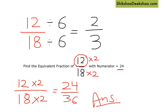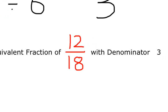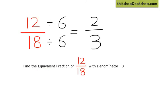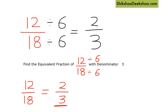And what if the question asks: find the equivalent fraction of 12 by 18 with denominator 3? This time I need to convert 18 to 3. What should I do? Obviously, I need to divide it by 6. So I divide both numerator and denominator by 6. Six divides 12 two times and 18 three times. So the equivalent fraction of 12 by 18 with denominator 3 is 2 by 3. That's my answer.